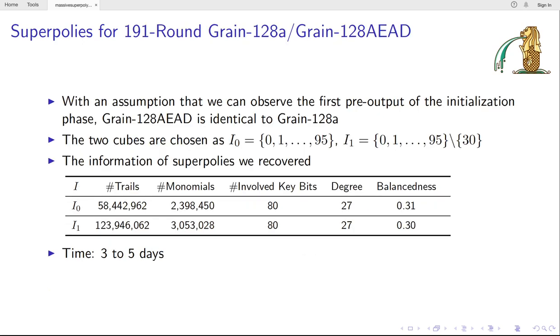The second application is for the GRAIN 128a. And please note that if we assume we can observe the first pre-output bit of the initialization phase of GRAIN 128aead, then the aead cipher is identical to GRAIN 128a. The two cubes are chosen as I_0 and I_1. I_0 contains all the nonce or IV bits, while I_1 contains all except the 30th. The two Super-Polys we recovered for 191 rounds are out here. The time for the two Super-Polys are 3 to 5 days.